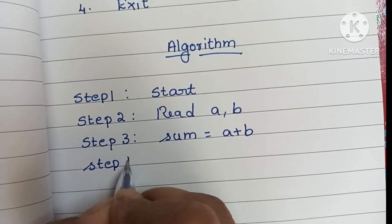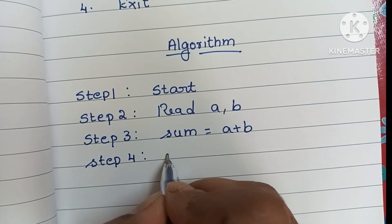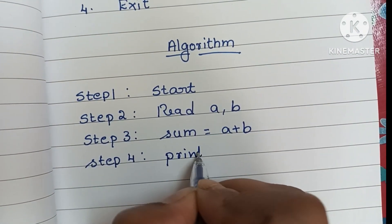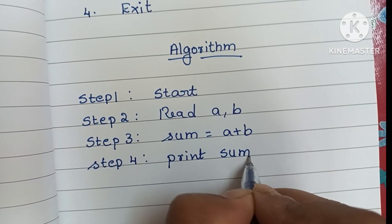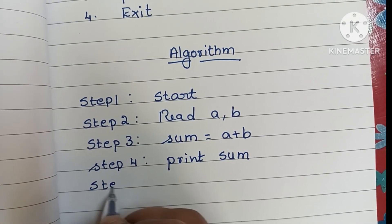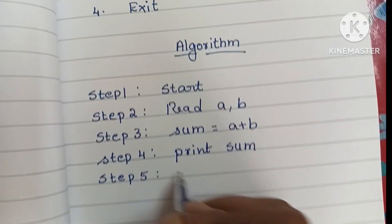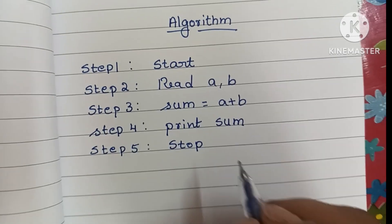In step four, we have to print the sum value: print sum. In step five, we have to stop the algorithm using the stop statement.